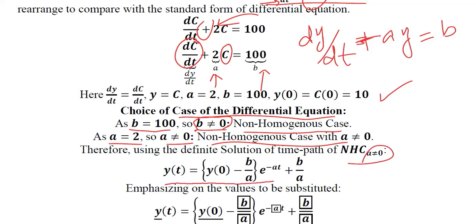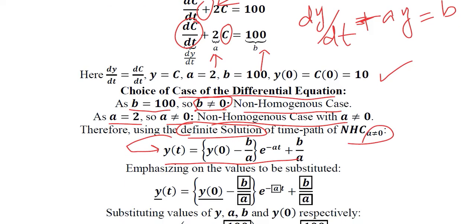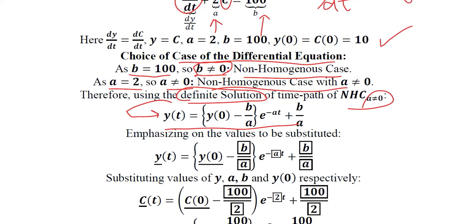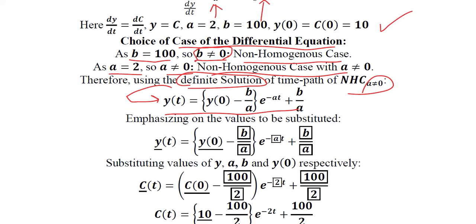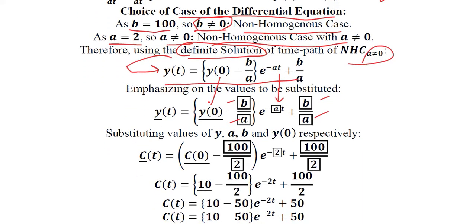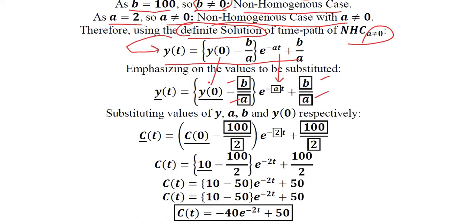For this case the formula for the definite solution applies, and we can substitute the values of a, b, and y-naught to solve it. The values of b and a are highlighted with boxes and y-naught is underlined. In the next step we put in the values of y, a, b, and y-naught — in place of y we have consumption, the economic variable, and this is the initial condition.